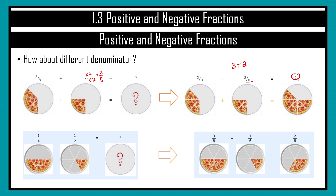The same approach applies for subtraction. When denominators are different, we change the denominator. For 1/2 minus 1/6, multiply 3 on the denominator of 1/2 to get 6, and multiply 3 on the numerator: 1 times 3 is 3, giving 3/6. Then 3 minus 1 is 2, so the result is 2/6. If we need to simplify: 2 divided by 2 is 1, and 6 divided by 2 is 3, so the final answer is 1/3 of a pizza.